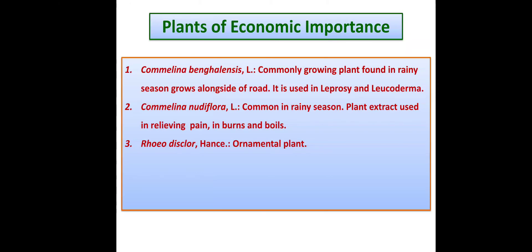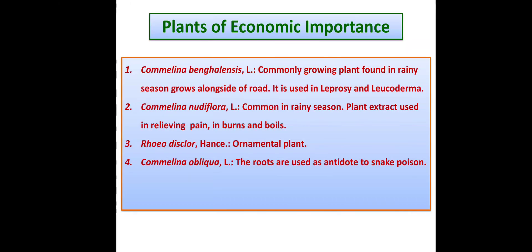Rhoeo discolor is an ornamental plant grown in the garden. Commelina obliqua is another plant of the family whose roots are used as an antidote to snake poison — it is a traditional medicine commonly used as an antidote for snakebite.